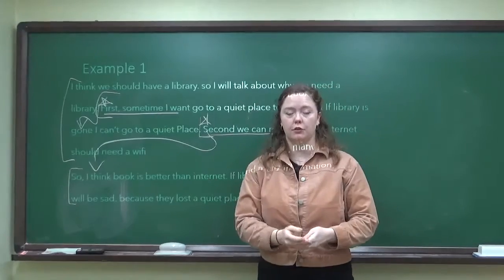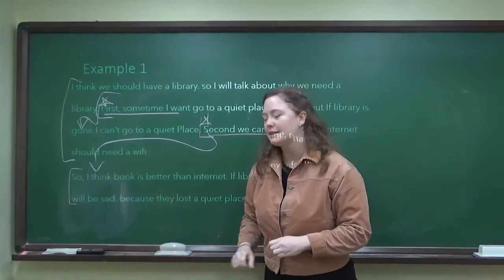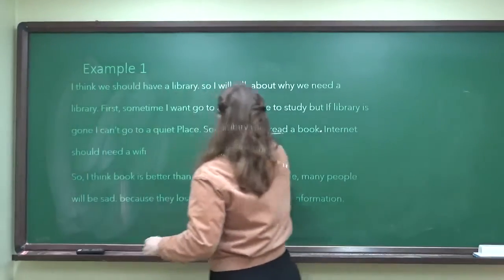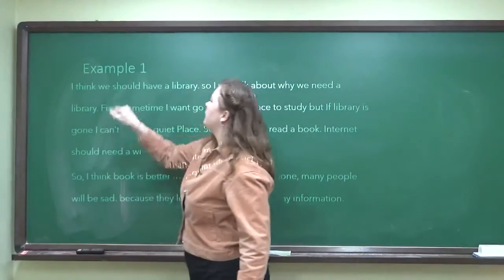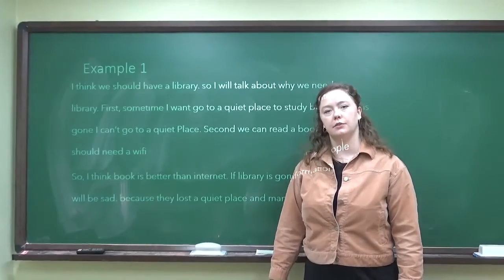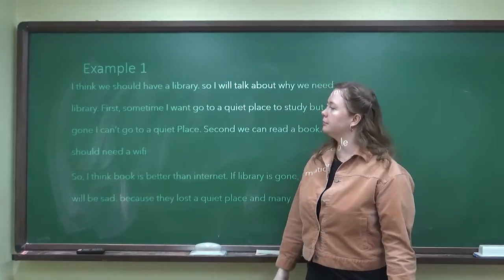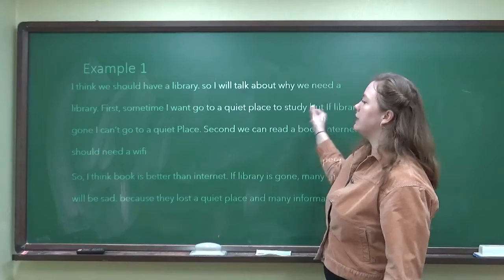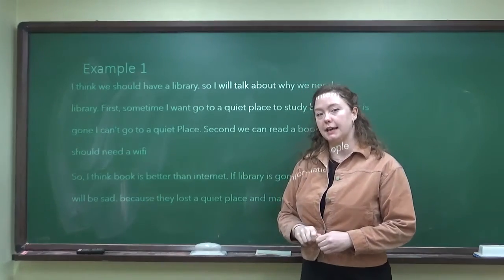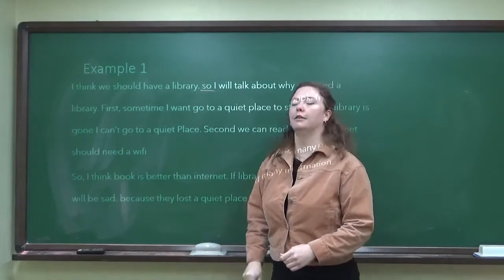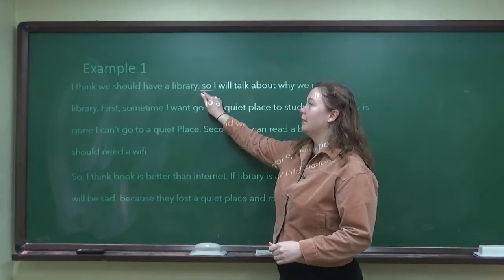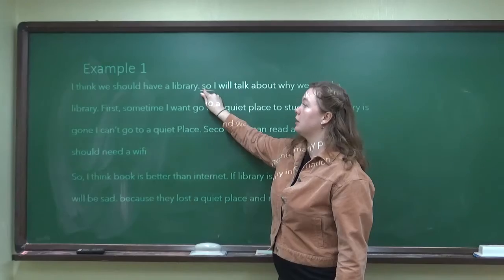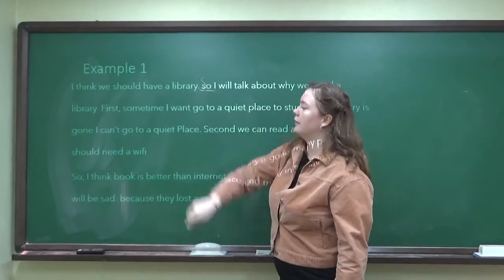Now that we've talked about the structure — the shape of this essay — let's look at some grammar. Let's look at the first sentence: 'I think we should have a library.' Is that okay? Do you see any mistake? I think it's pretty good. Good job. So, 'I will talk about why we need a library.' Do you see any mistake? What's wrong with this word — 'so'? This word 'so' is the first word of a new sentence, and so that should be a capital S.